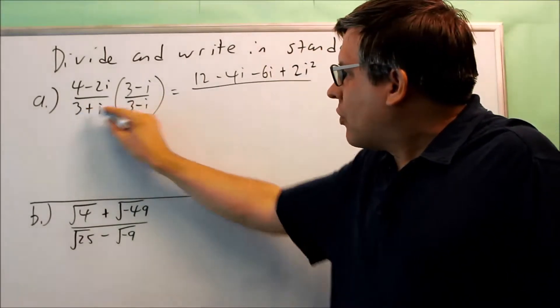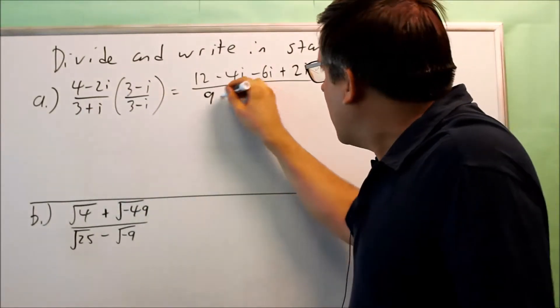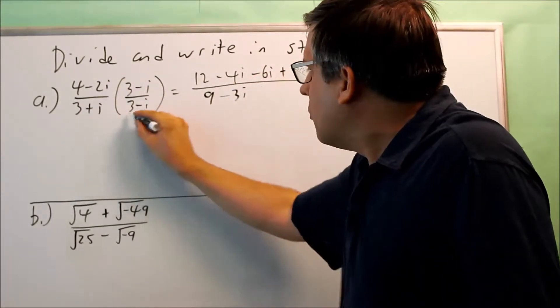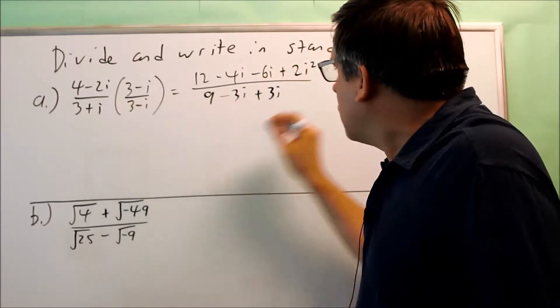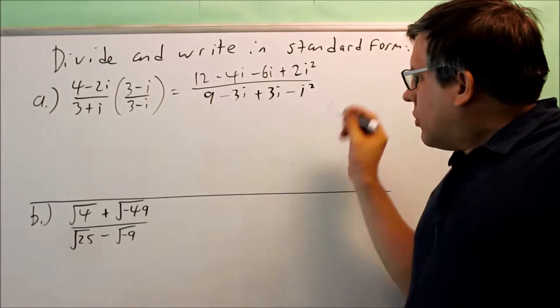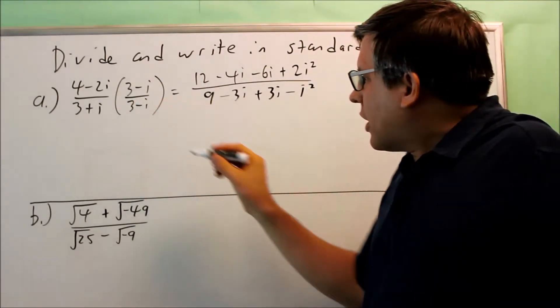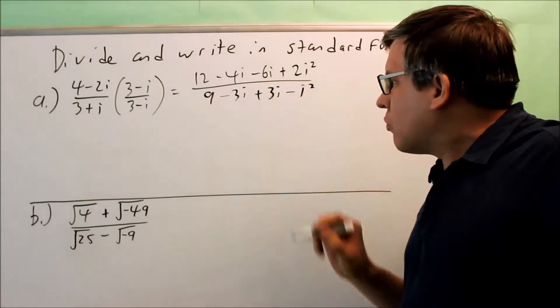Now on the bottom, we have 3 times 3 is 9. Then I have negative 3i. Then I get the middle terms plus 3i. And then I get the end terms that will be minus i squared. Now, this is the reason why you want to multiply by a conjugate. What we notice here is these are going to cancel out. Negative 3 and 3 will be gone.